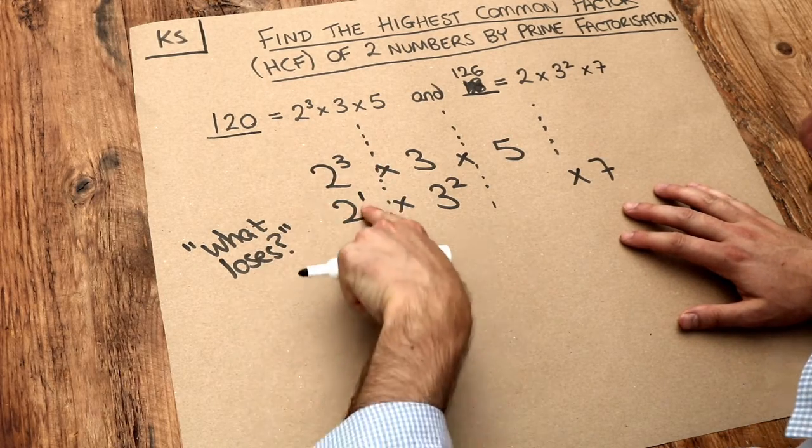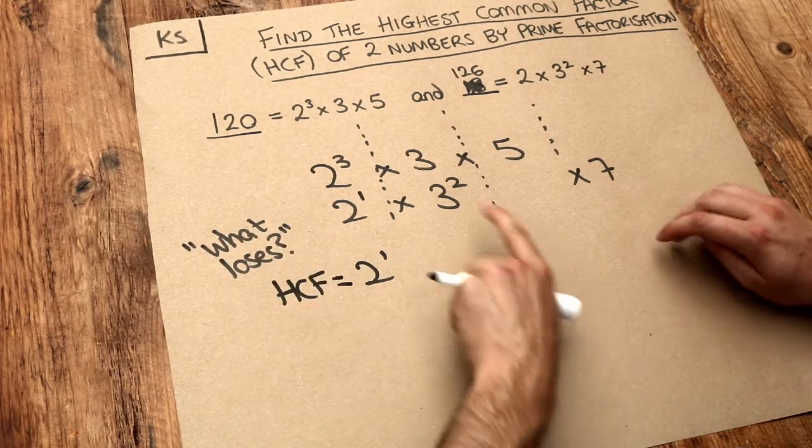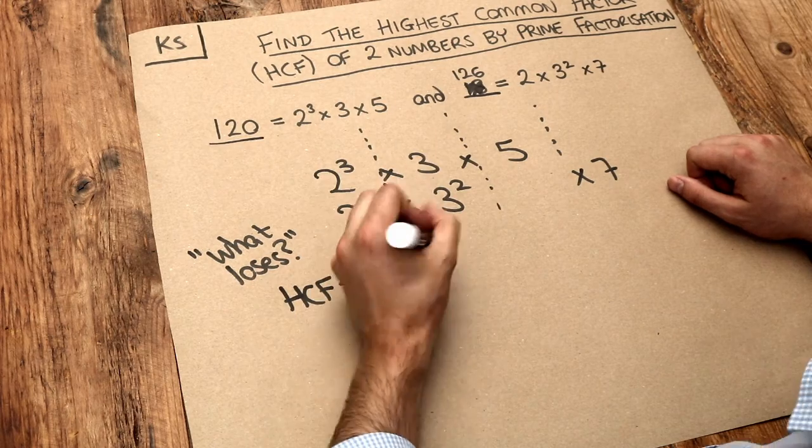We're going to put 2¹ in our highest common factor. What loses out of 3 and 3²? Well, 3 has the lower index of one, so we just put the 3.